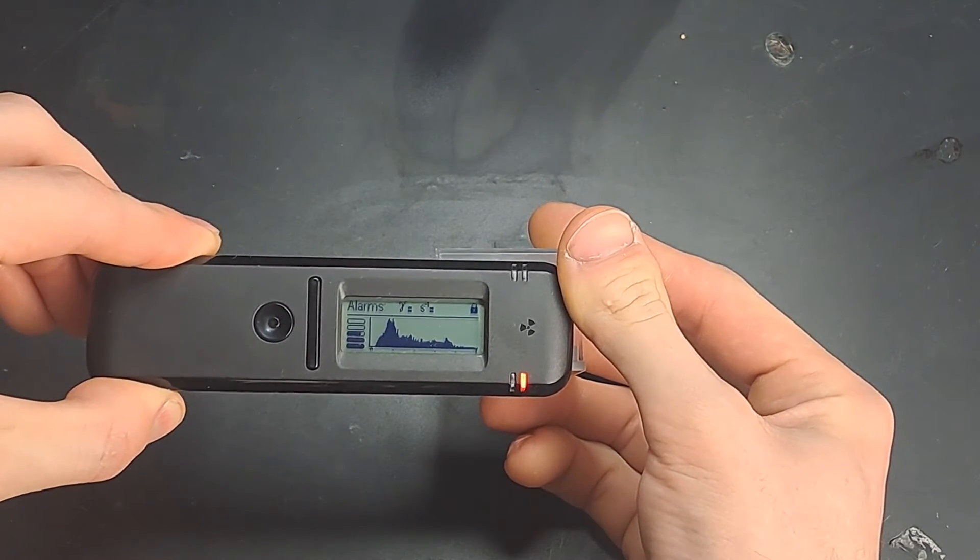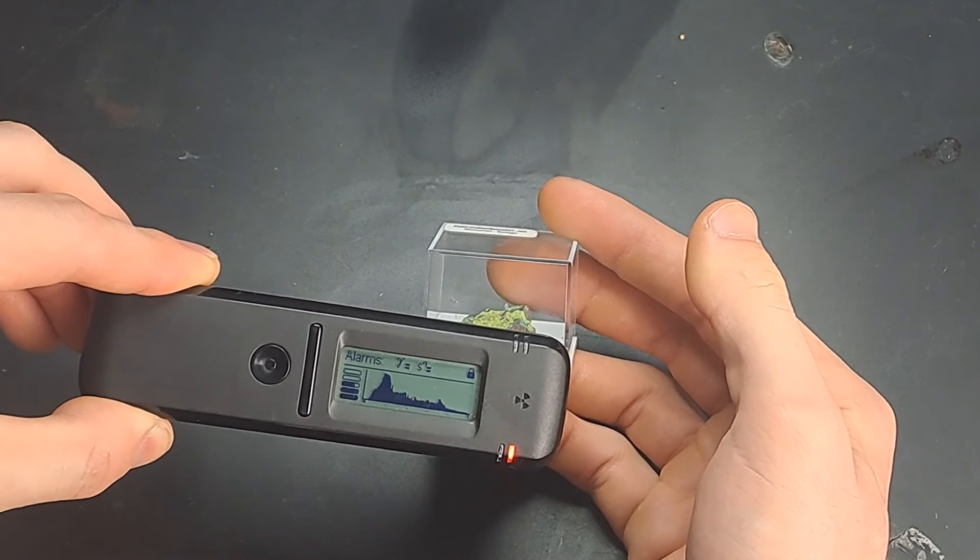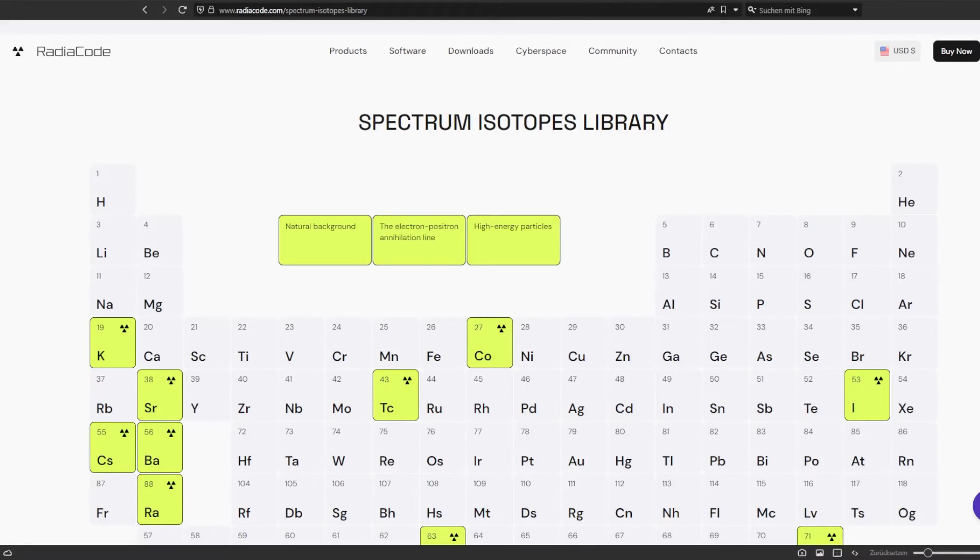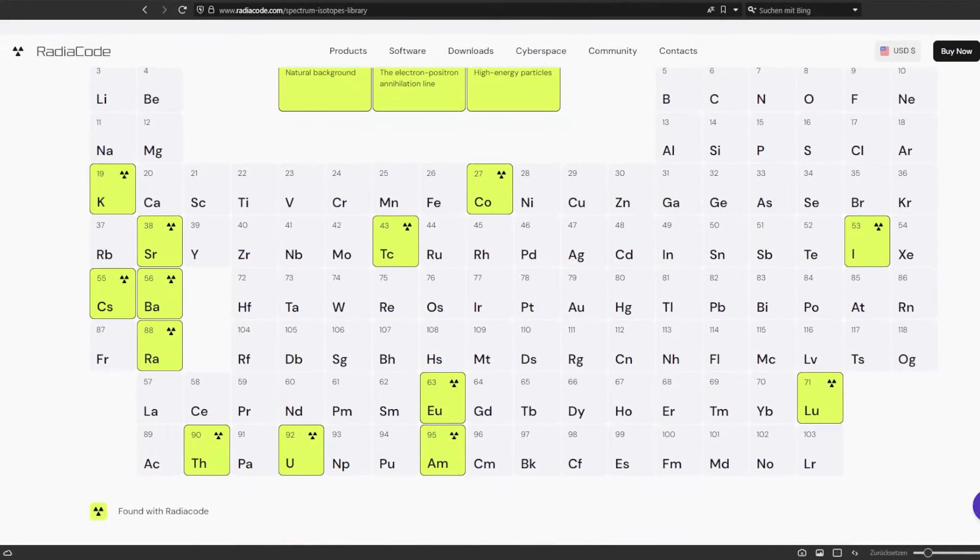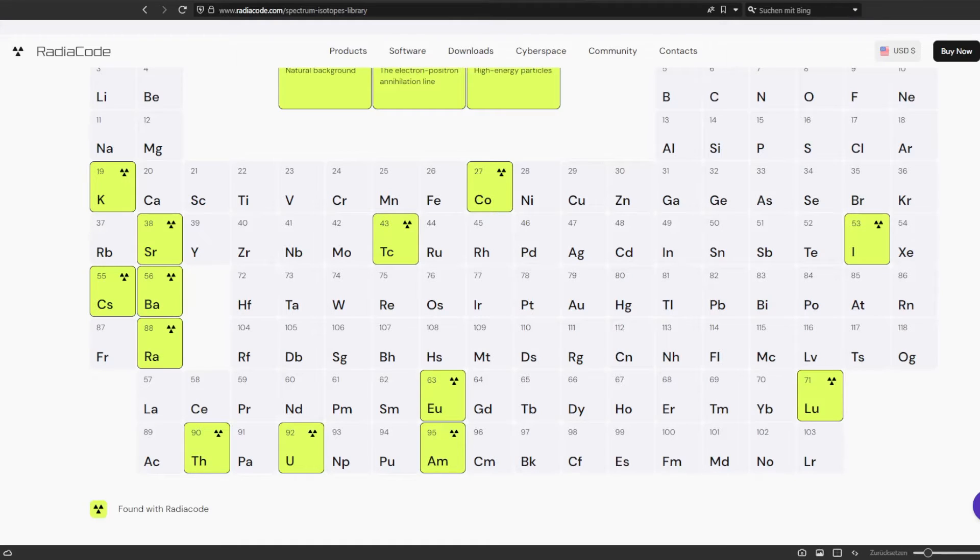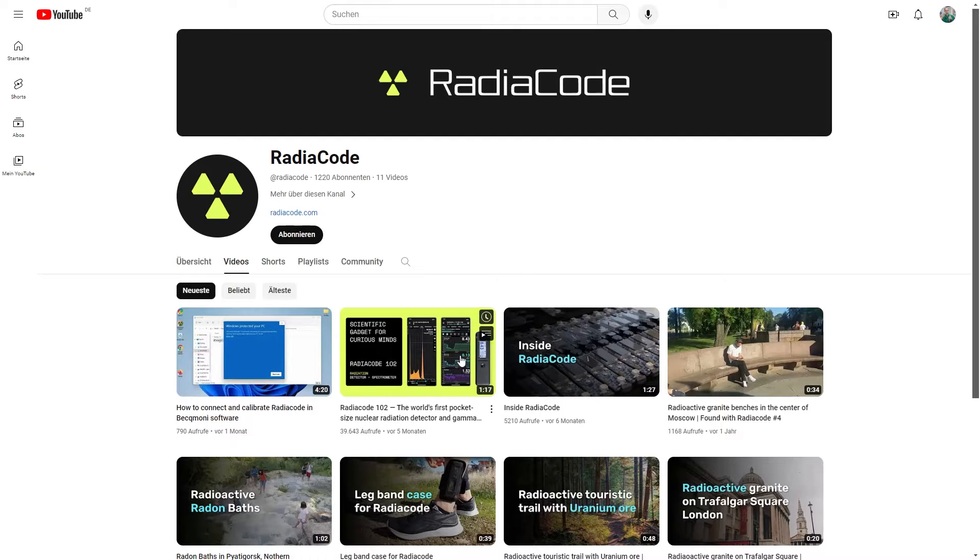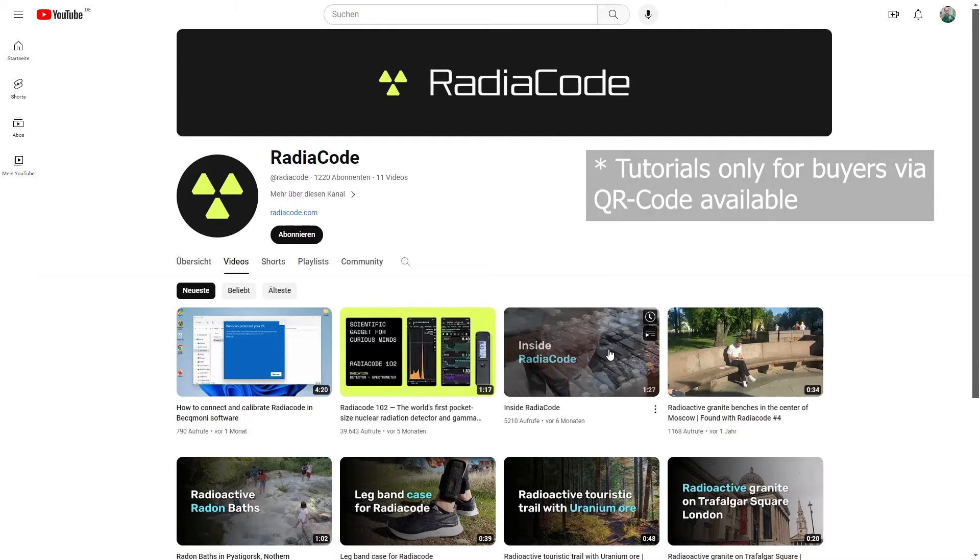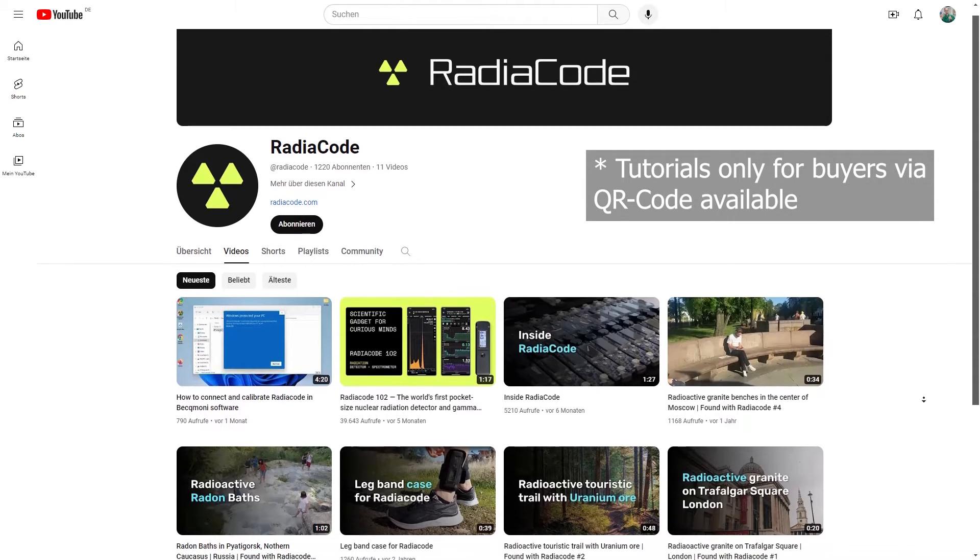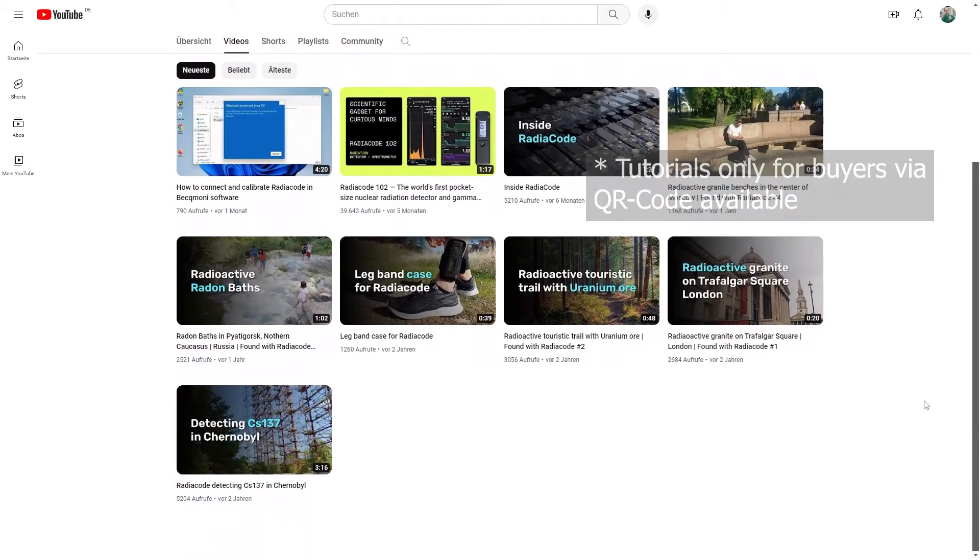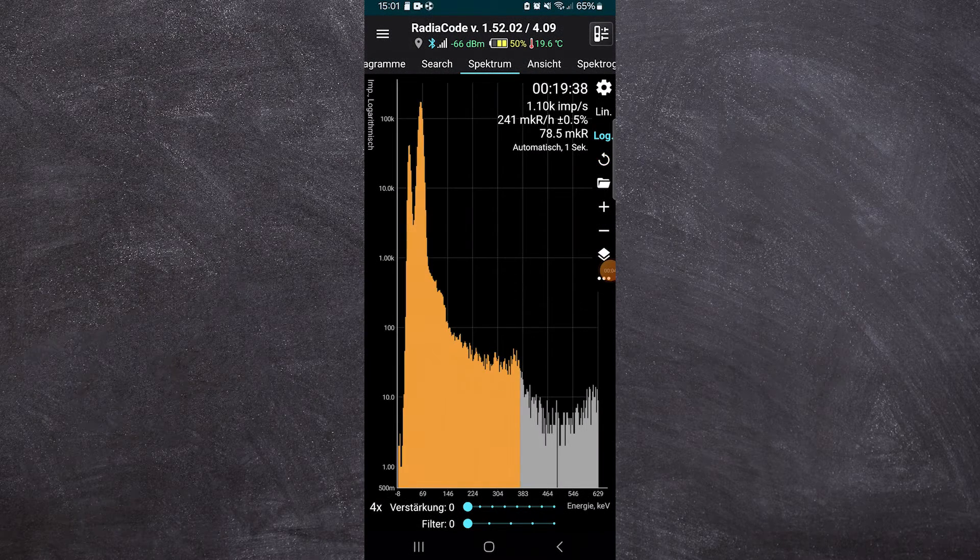Radiacode also has some sort of online spectrum library, they told me. It's definitely well done. Now, what's my personal opinion? The handling is easy. You just need to take one hour and watch the really well-made tutorials. Then you can use the most important functions of this device. The website and the app are really well designed. Can I recommend buying it? Disclaimer. It is my opinion, but I was given this device as a gift.